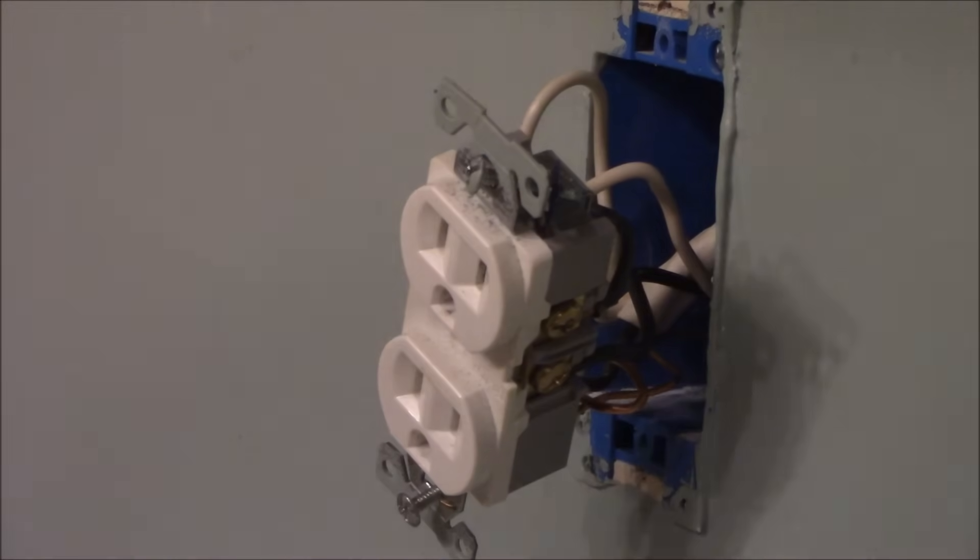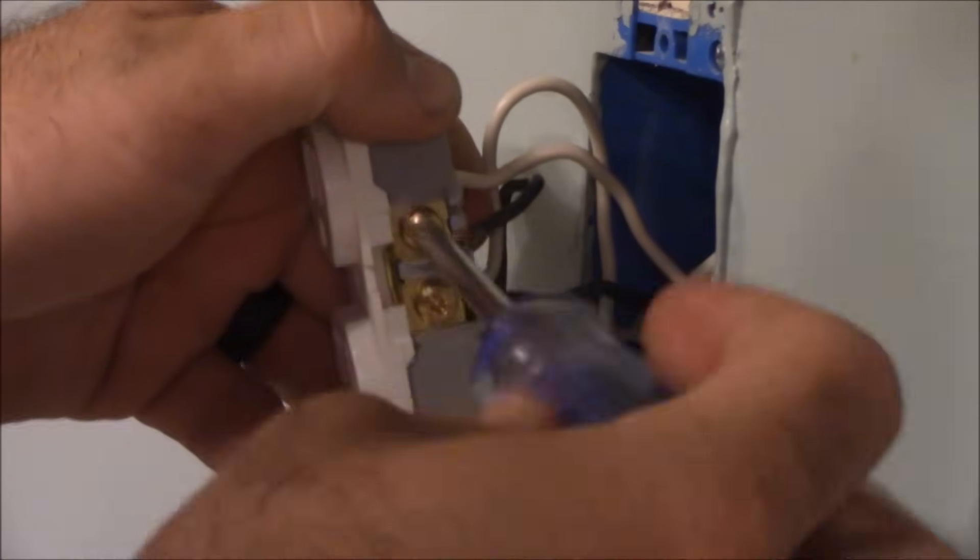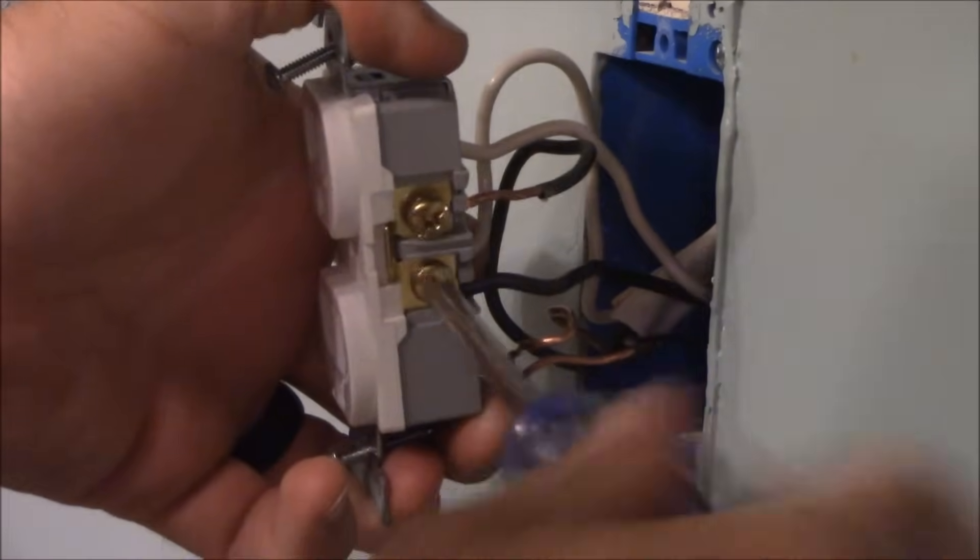The next step is to disconnect all the wires connected to this one. So we're going to come over here and take these screws loose. They won't come out all the way. Once you loosen it, it should pull right out. Same on the other side.